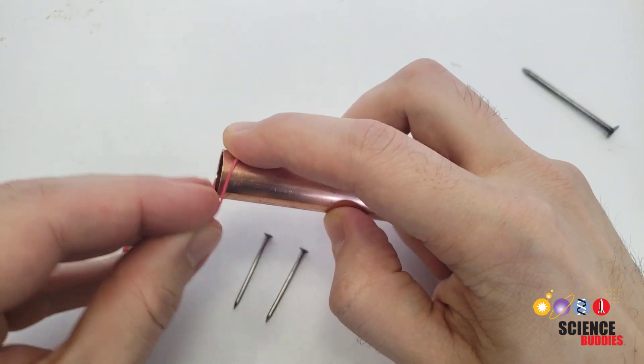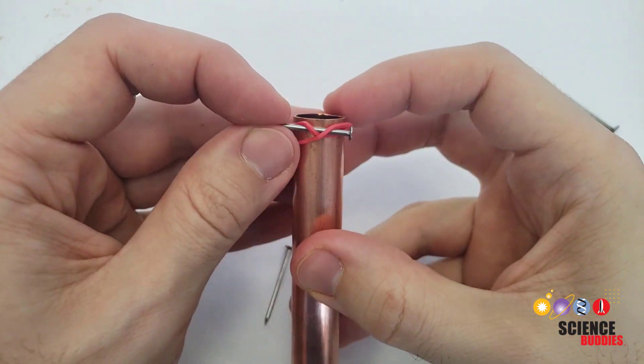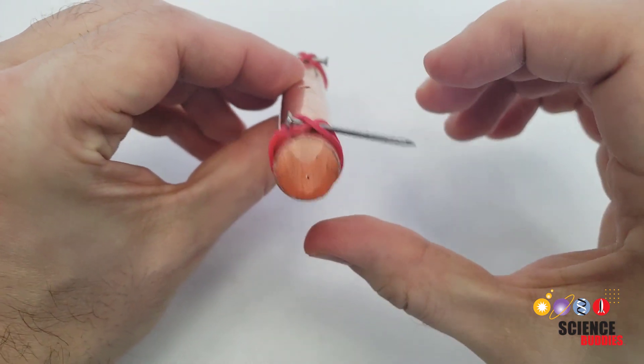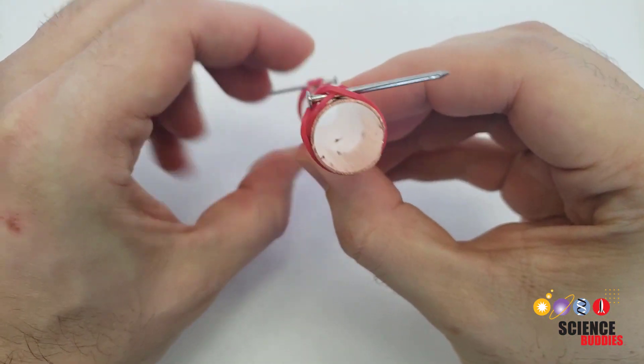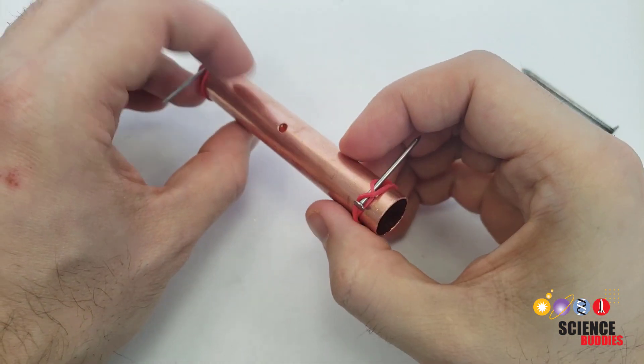The nails will form the electrodes of your rotor. Attach them to the copper pipe using two rubber bands per nail. When you're done, the nails should be parallel to each other, but pointing in opposite directions and located at opposite ends of the pipe. You can make small adjustments using the rubber bands if you need to reposition the nails.